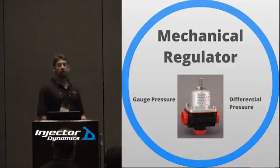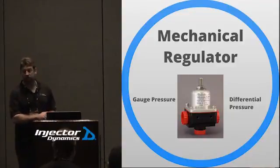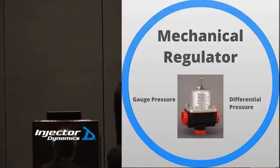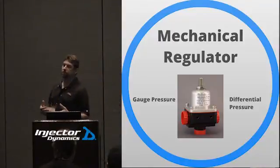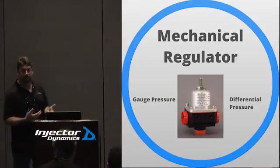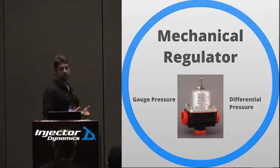The mechanical regulator is very simple. We all know how it works. There's a spring-loaded diaphragm in there. And had I chosen the correct photograph, we would see a port up there on the top that goes to the intake manifold that supplies your intake manifold vacuum or boost to the top side of the diaphragm to maintain constant differential pressure.